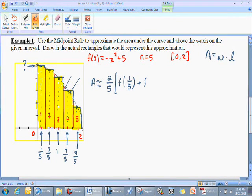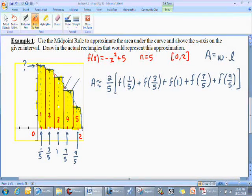And you continue this process with each of those midpoints that we found: the 3/5, the 1, the 7/5, and the 9/5. You may want to double-check. Count: one, two, three, four, five. We do have all five rectangles accounted for.